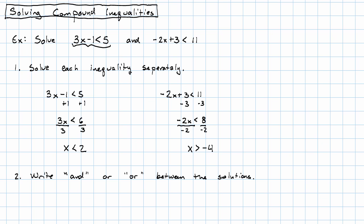The next step is super easy, but we can't leave it out. We write the word 'and,' in this case, because we started with an 'and,' or the word 'or,' if we started with an 'or,' between the solutions. So we would write x is less than 2 and x is greater than negative 4.